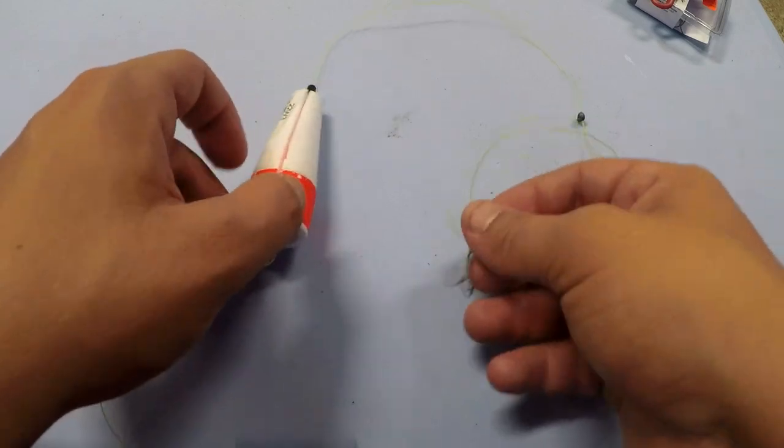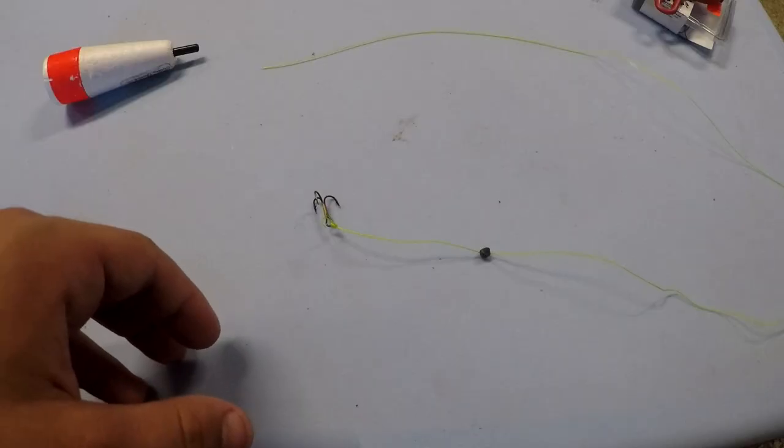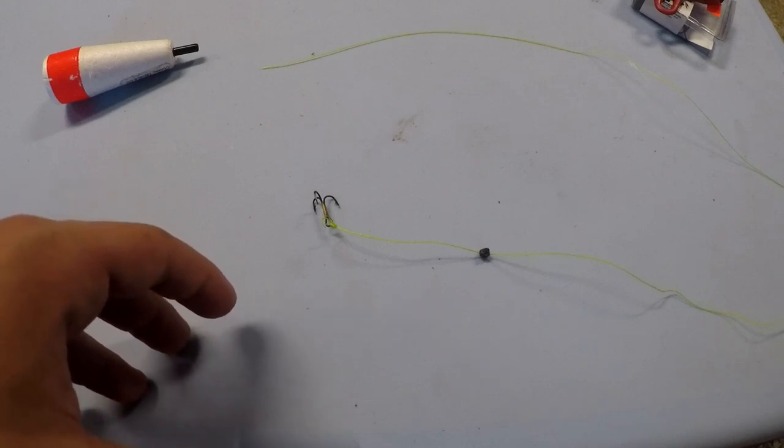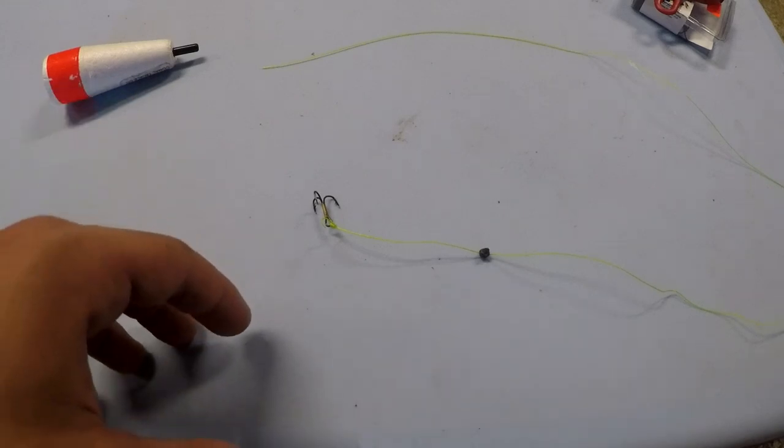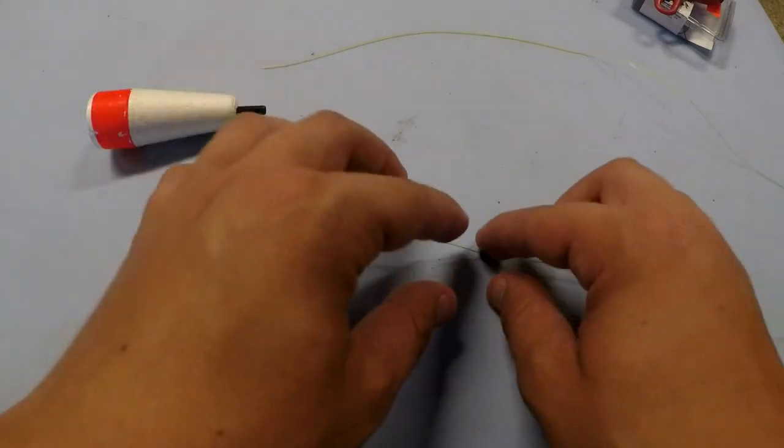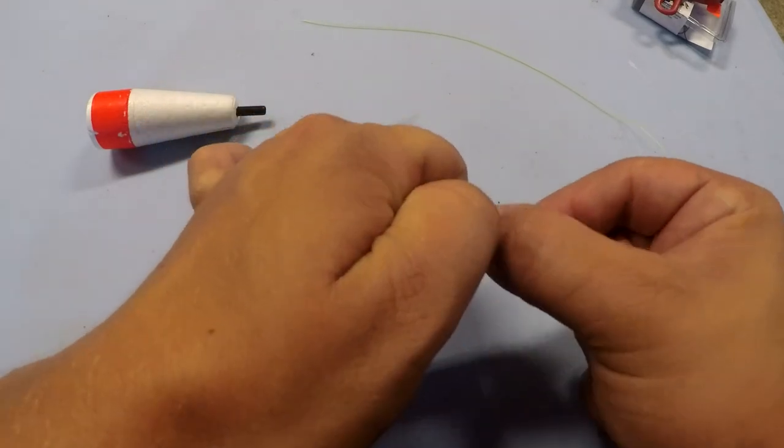Now if they're still not biting and they're really finicky, and you feel like you're just not catching anything off the bottom or using a bobber up top, the best thing to do is simply remove the bobber as well as the weight.